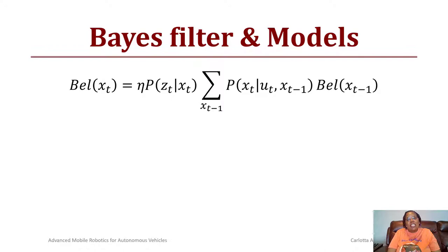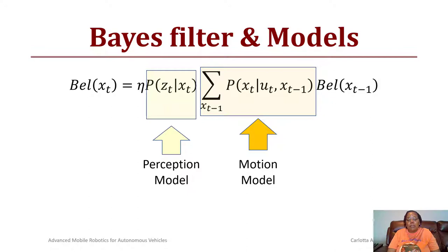Given Bayes filter and models for modeling motion and sensing, we use the following formula: the belief of x_t times the normalization constant eta times the probability of a given measurement z_t times the state x_t, times the summation of all the previous states, the probability of the current state x_t given the input control u_t, the previous state x of t minus one, times the belief of x of t minus one. We call the term p(z_t | x_t) our perception model and we call the term the summation of the probability of x_t given our control in the previous state our motion model.